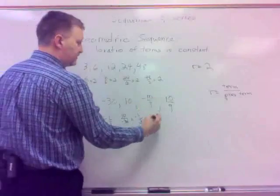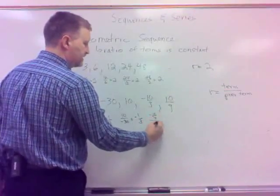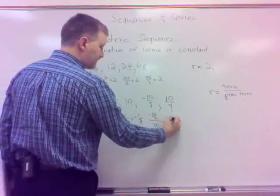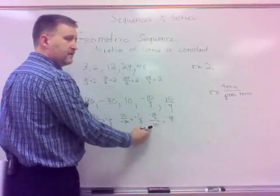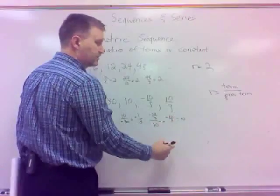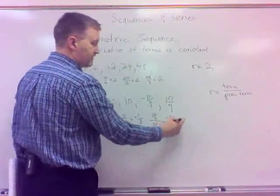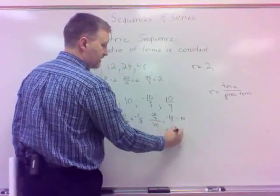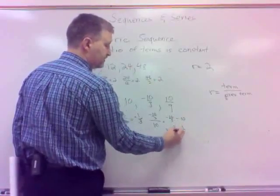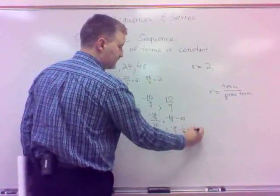And then, even if you do these, negative ten-thirds divided by 10, which you might be thinking, what is that? But if you remember, with fractions divided, think reciprocal. So negative ten-thirds divided by 10 means negative ten-thirds times the reciprocal of 10, one-tenth. So the tens cancel, you get negative one-third.